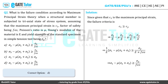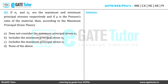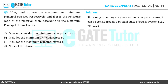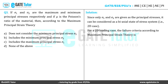Let us proceed to question 3: If σ₁ and σ₂ are the maximum and minimum principal stresses respectively, and μ is the Poisson's ratio, then according to the maximum principal strain theory — we have to decide whether the failure condition includes both principal stresses. Since only σ₁ and σ₂ are given, the material is under biaxial (two-dimensional) loading. The failure criteria is: σ₁ − μσ₂ = σ_yt / FOS.